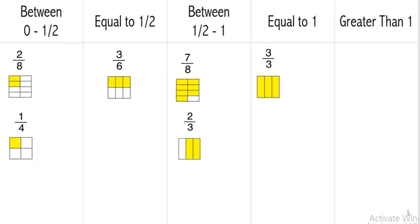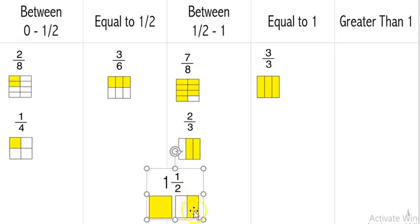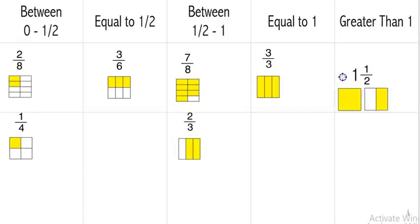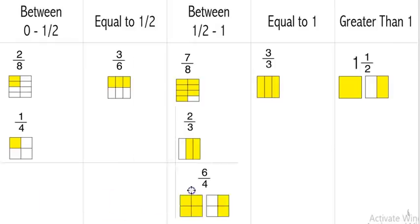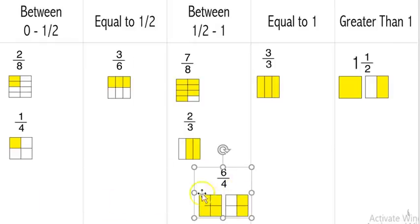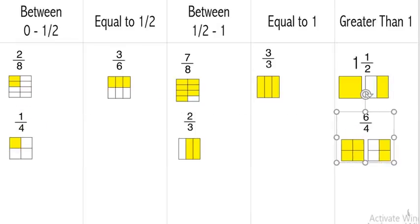The next one is one and a half. When I look at the picture, I see one whole box colored in and then a second box that only has half of it colored in, so it is greater than a whole. The last one is six-fourths — a whole box is colored in and then a second one has two more little boxes colored in, so this is also greater than a whole.